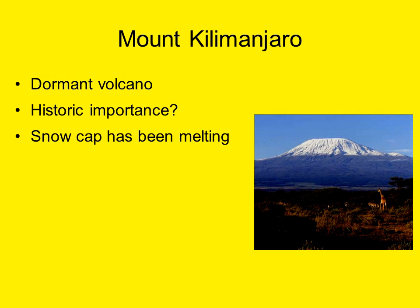Mount Kilimanjaro, at 19,000 feet, is the highest peak in Africa. The mountain is actually a dormant volcano — there were three cones producing volcanic activity at one point, but two are now extinct and one is dormant. The tallest cone, Kibo, would be several thousand feet taller had its top not blown off in an eruption several hundred thousand years ago.